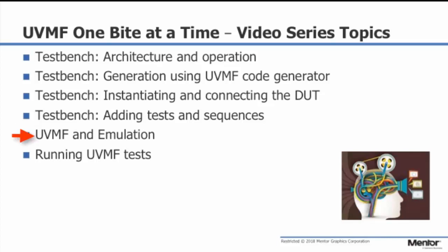The video on UVM-F and emulation describes the test bench and interface agent architecture required to accelerate UVM-based environments. The architecture described is provided by UVM-F, and all code generated by the UVM-F code generators is operational in emulation as well as simulation. The video on running UVM-F using VRM describes the test list, configuration file, and switches provided by UVM-F for running regressions using Questa's Verification Run Manager.